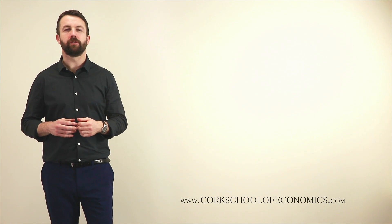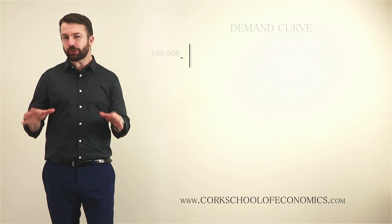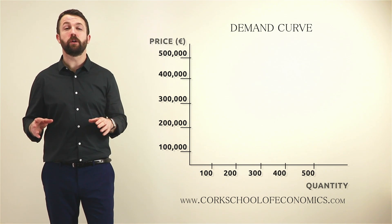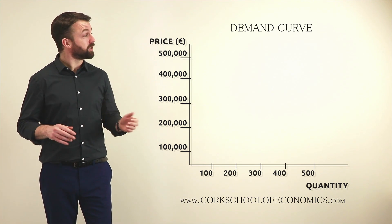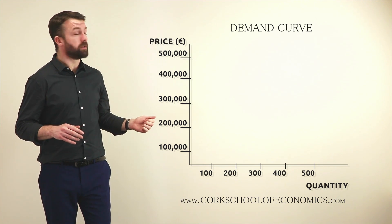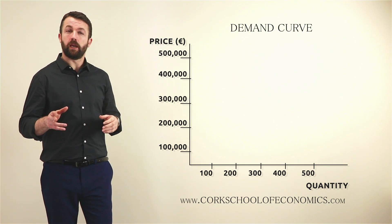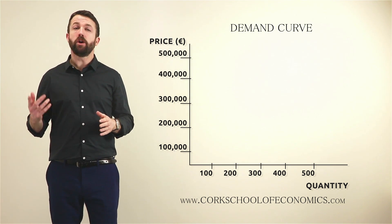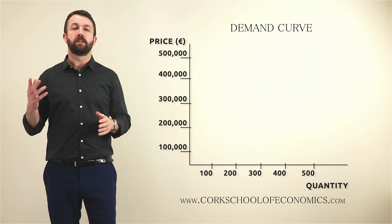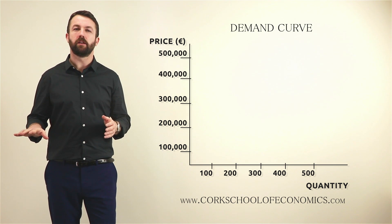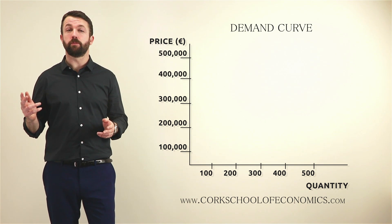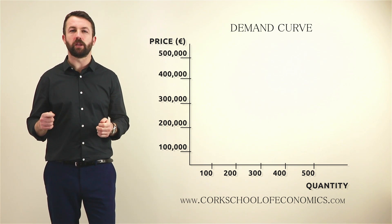Let's create a demand curve relating to the demand for houses in Douglas in the Cork area. The law of demand states that the higher the price, the lesser the quantity demanded, and that the lower the price, the higher the quantity demanded. So how do we represent this visually?